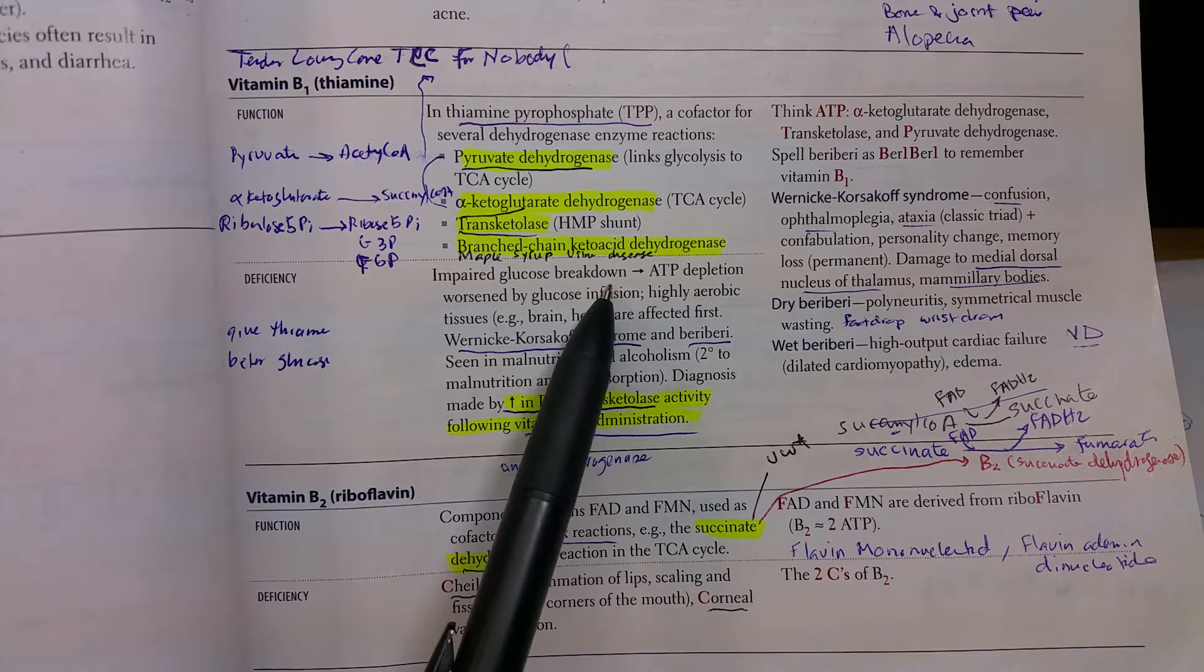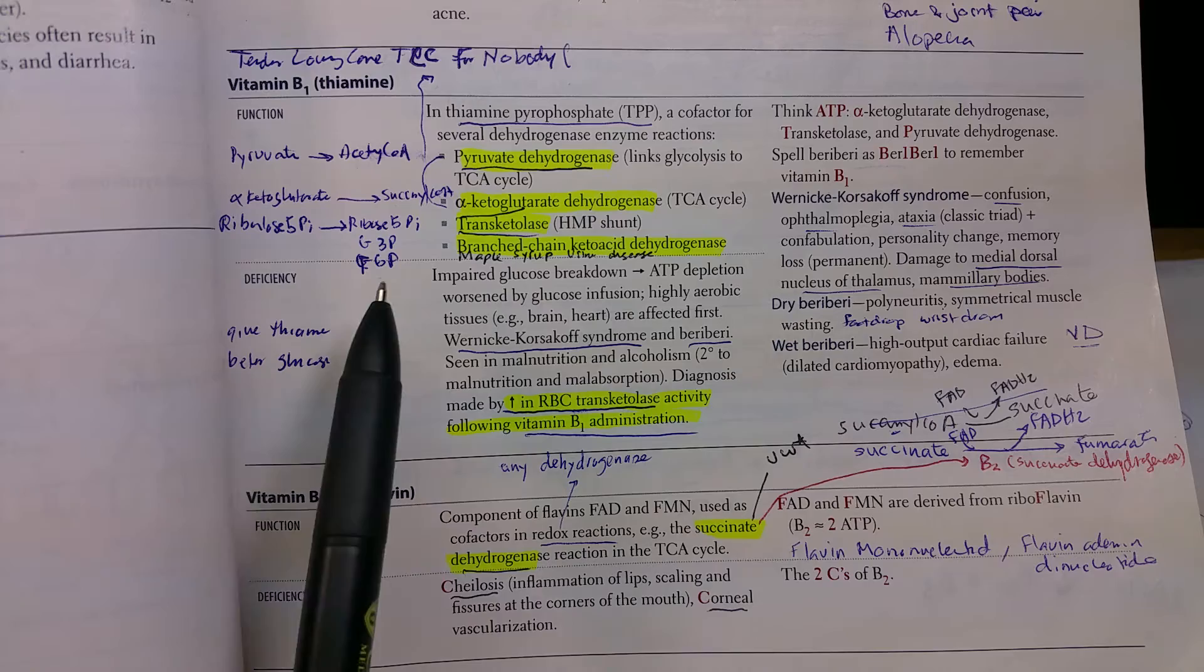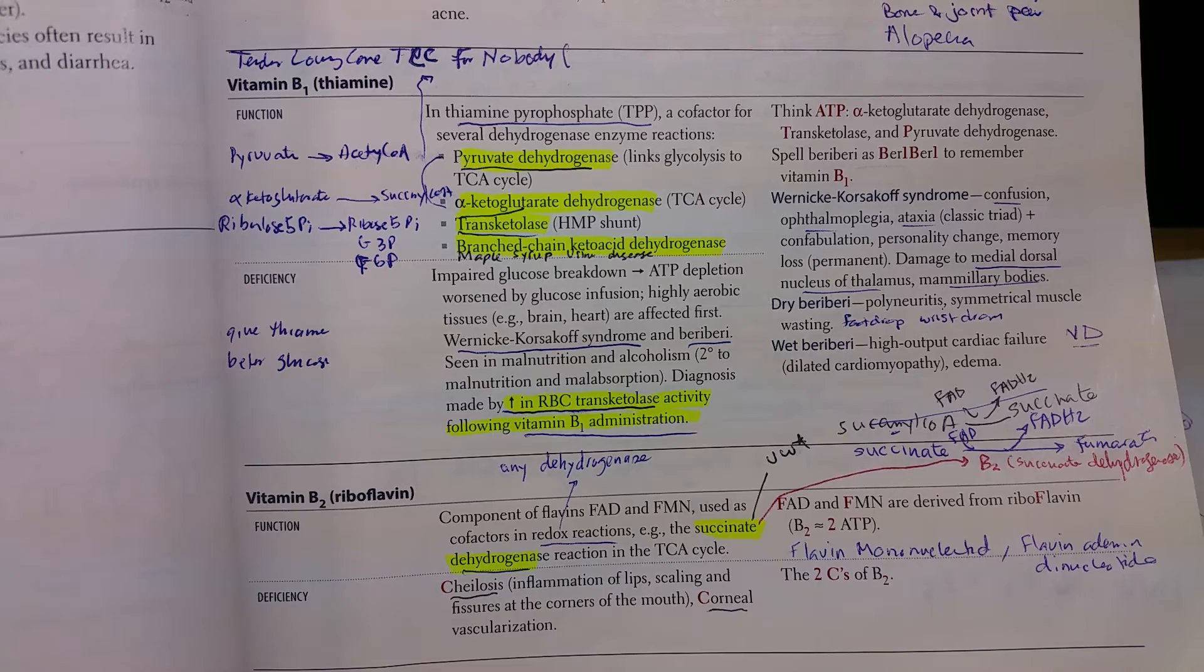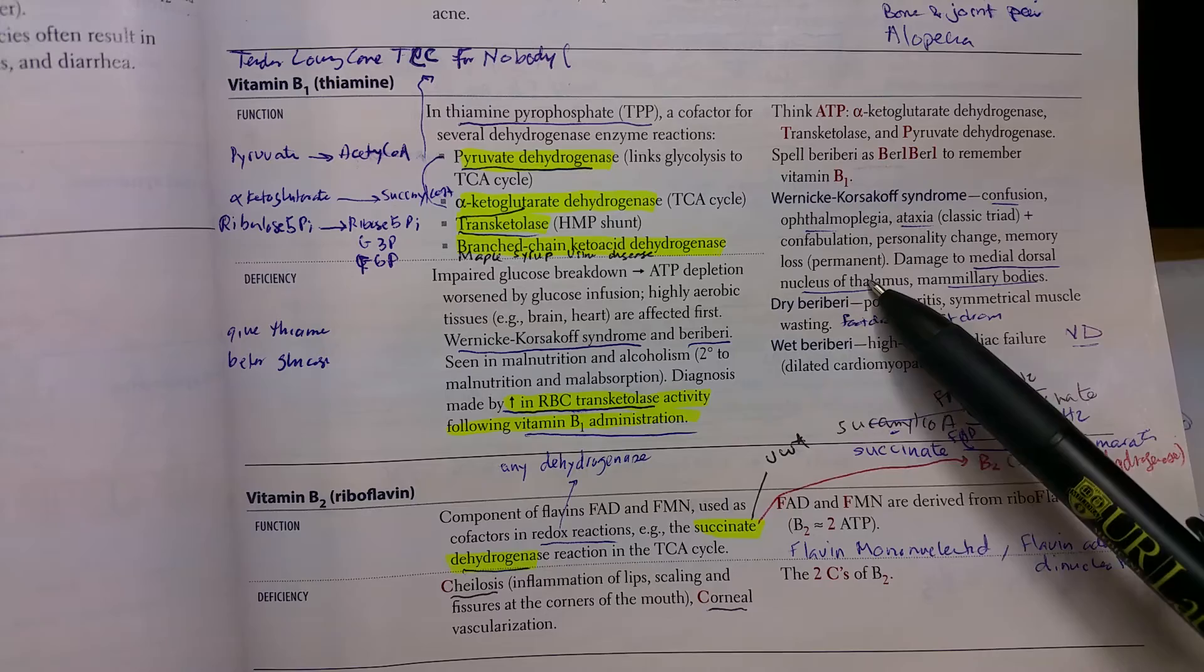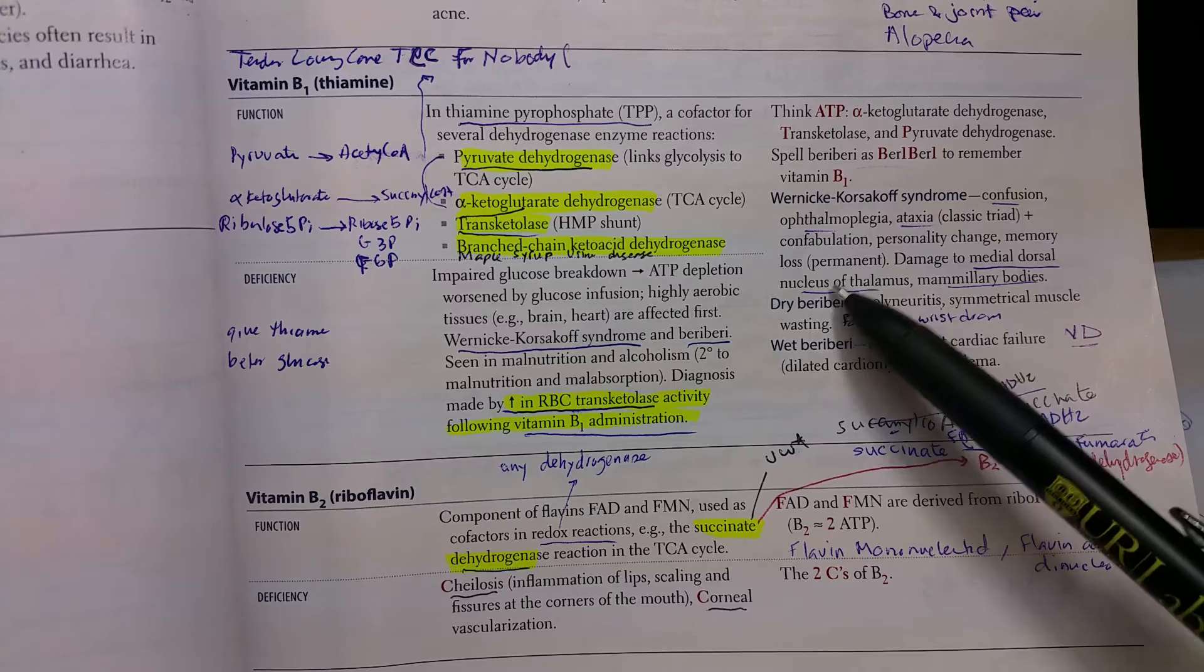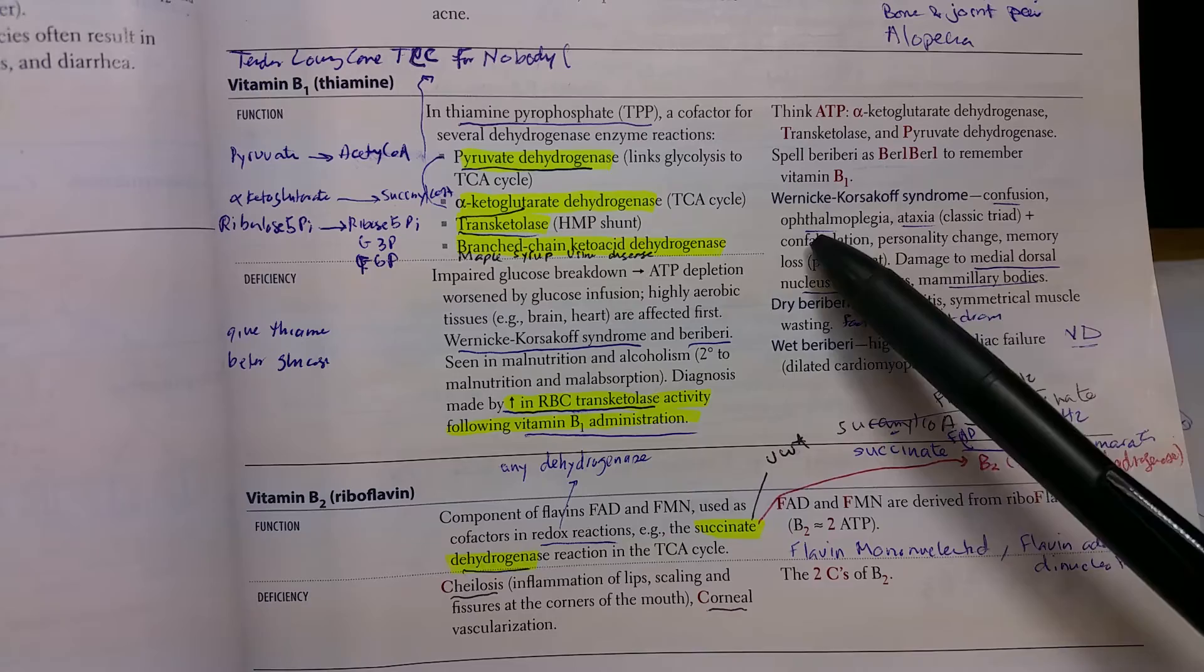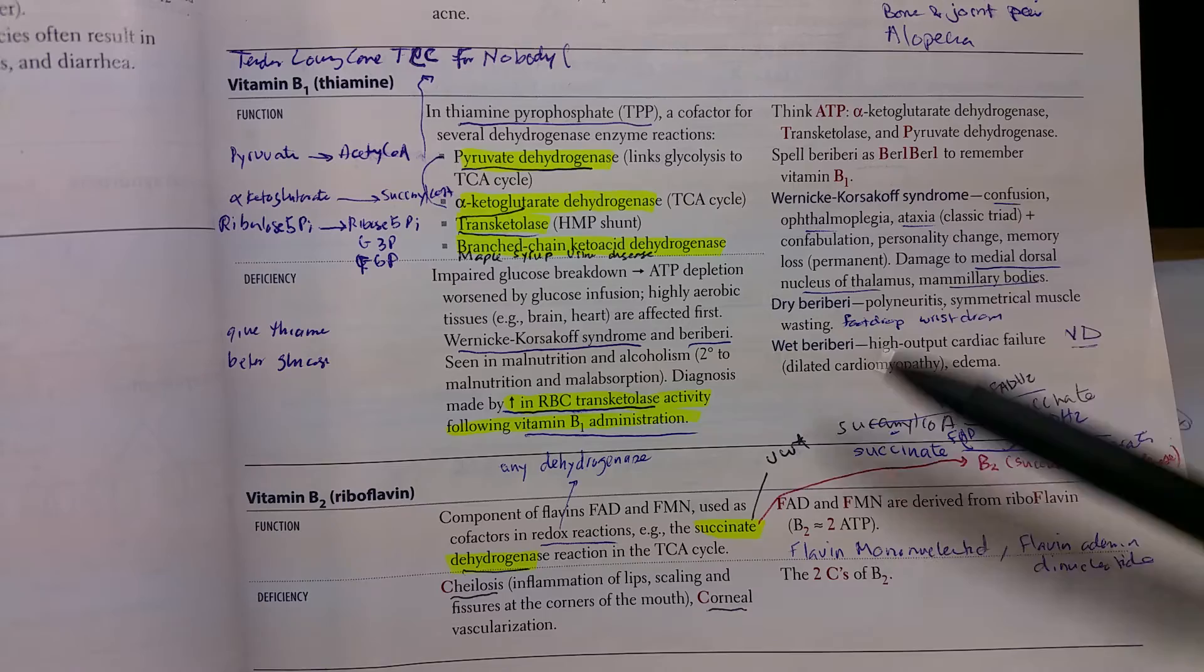It's very important in glucose metabolism, so in deficiency, as we see in many alcoholics, there is impaired glucose metabolism and it affects the brain. Two syndromes you have to know: Wernicke-Korsakoff and beriberi. In Wernicke-Korsakoff syndrome, there's damage to the medial dorsal nucleus of the thalamus and mammillary bodies. To call it a syndrome, you have to have a triad of confusion, ophthalmoplegia, and ataxia. There might also be confabulation when there are memory gaps they fill with anything they make up.